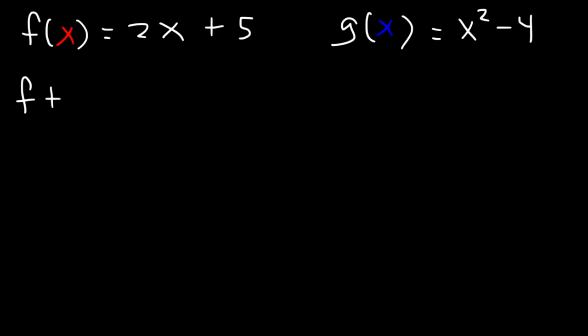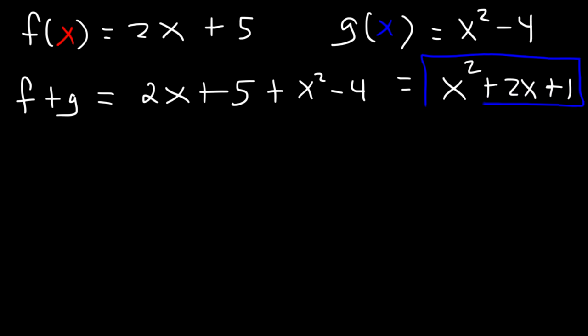So what is f plus g? What's the sum of the two functions? All you got to do is add them. 2x plus 5 plus x squared minus 4 and combine like terms. So all we could combine is 5 and negative 4 which adds up to 1, so it's x squared plus 2x plus 1. That's the sum of f and g.